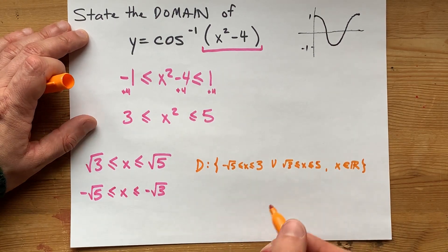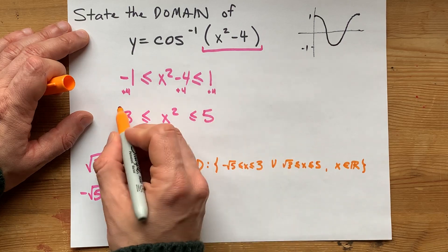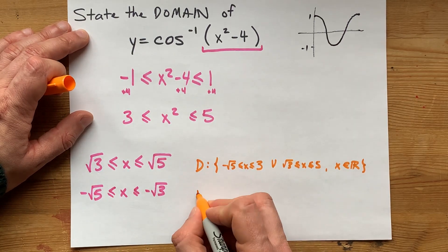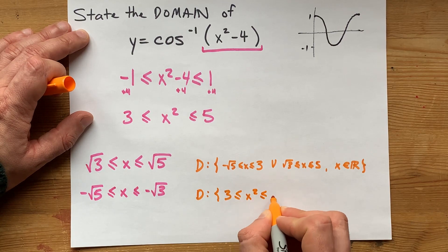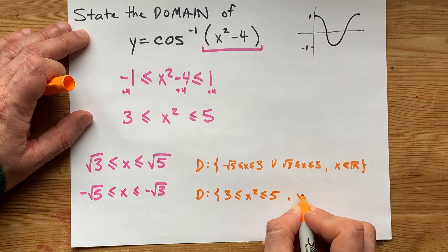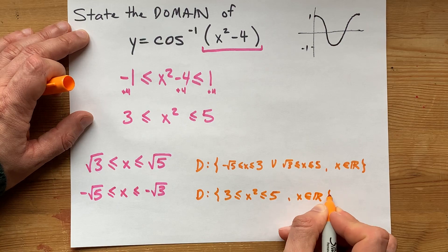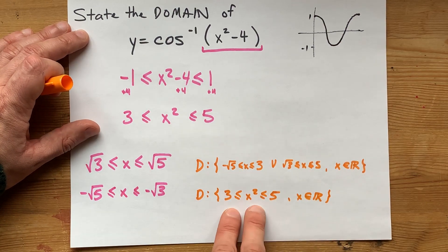One other option for you is to copy down just this on its own. If you said that 3 is less than or equal to x squared is less than or equal to 5, a good mathematician would be able to deduce that both of these were included in that.